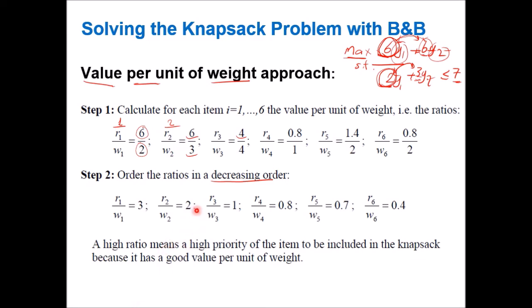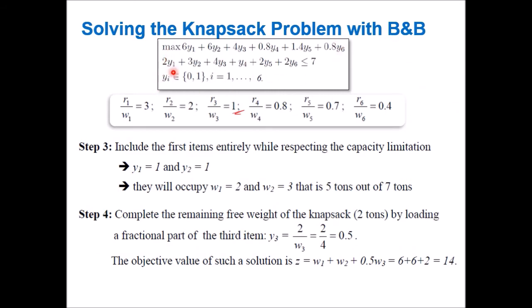We calculate value per weight for all items, then order them in decreasing order so that we select the highest-value-per-weight items first. In this example, item one is the best alternative, item two is second, item three is third, and so on. For simplicity, the items in this example are already ordered according to their value per weight.